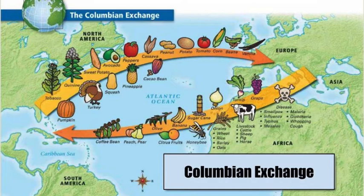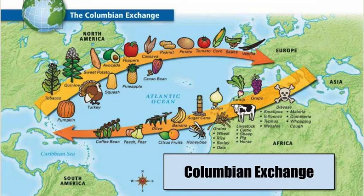The Columbian Exchange is the accidental and sometimes intentional biological exchange that takes place after the voyages of Columbus — hence the name. When the people of the Eastern Hemisphere engaged in interaction with the people of the Western Hemisphere, you brought together two biological zones of planet Earth that had been isolated from each other for tens of thousands of years, so there was no way for plants or animals to diffuse between them.